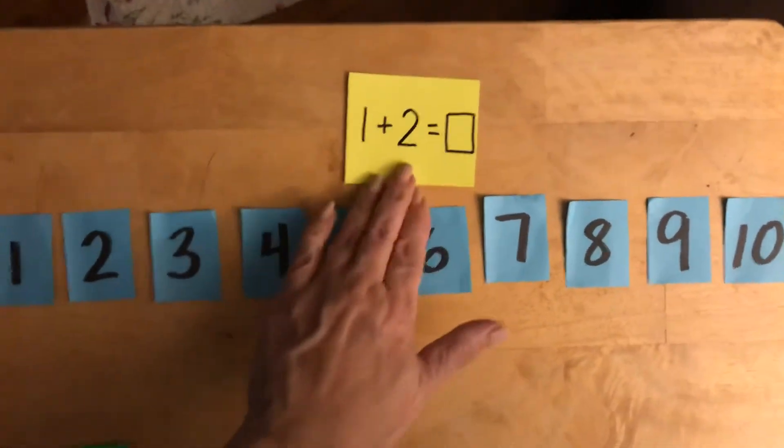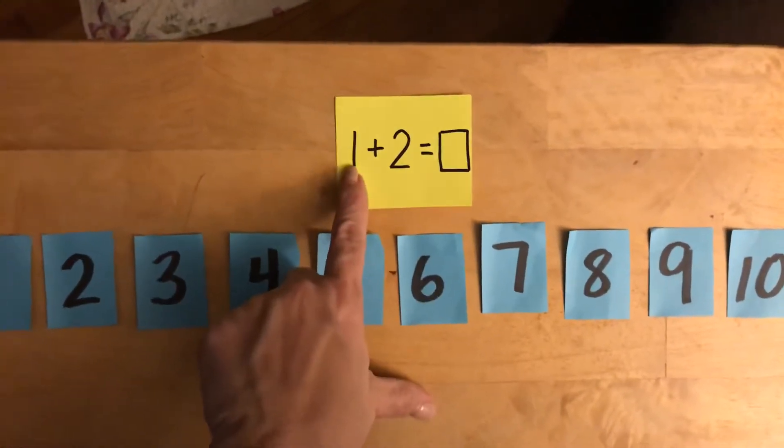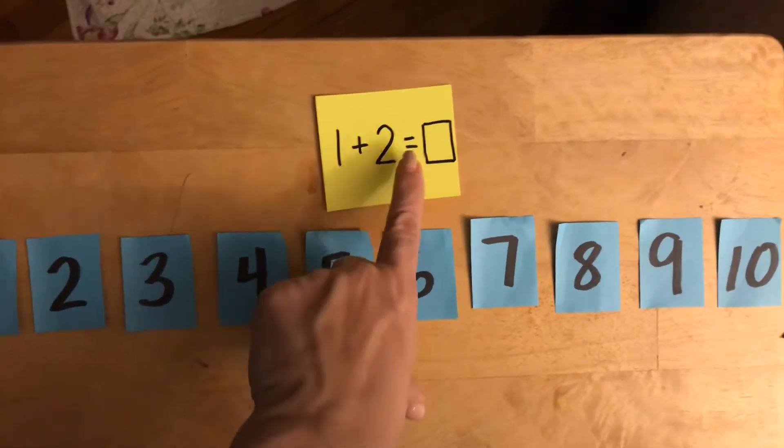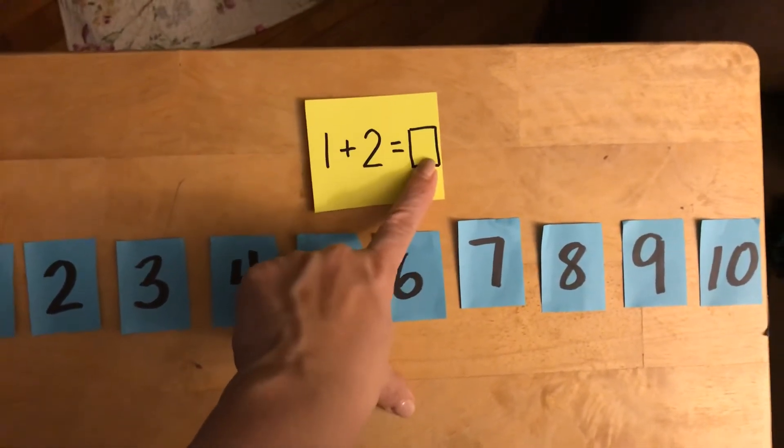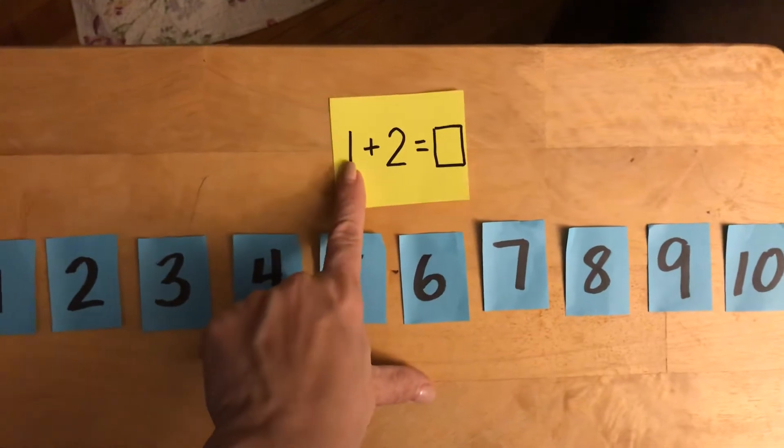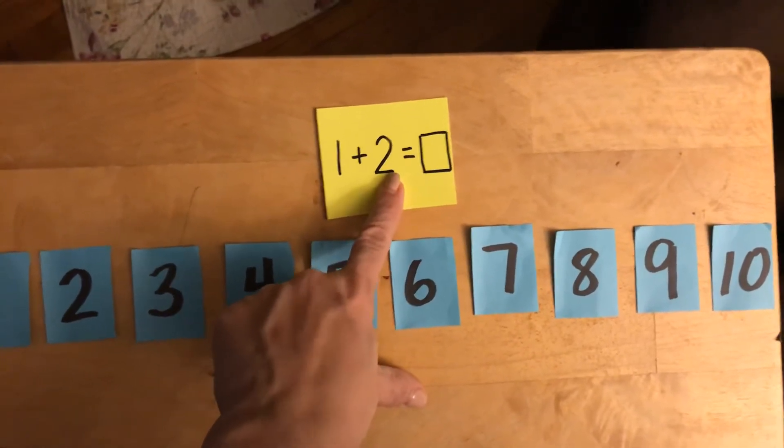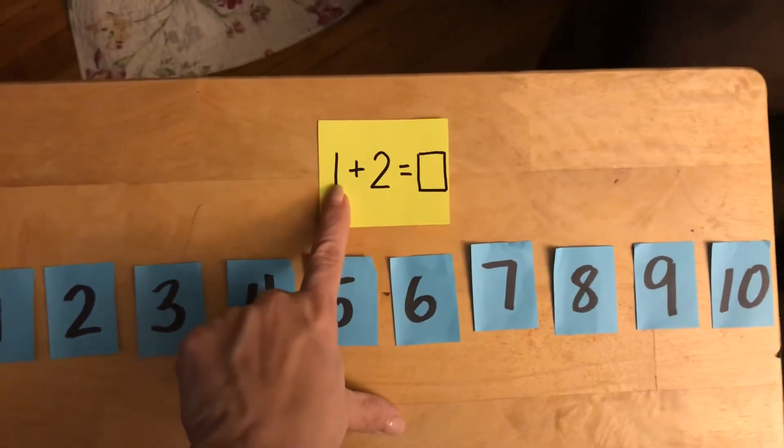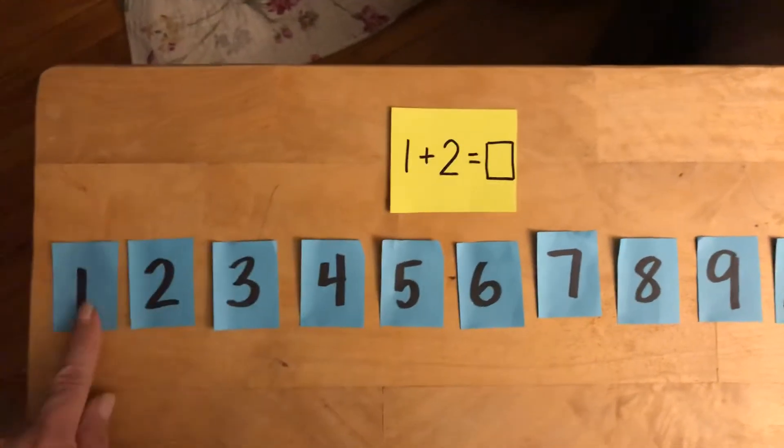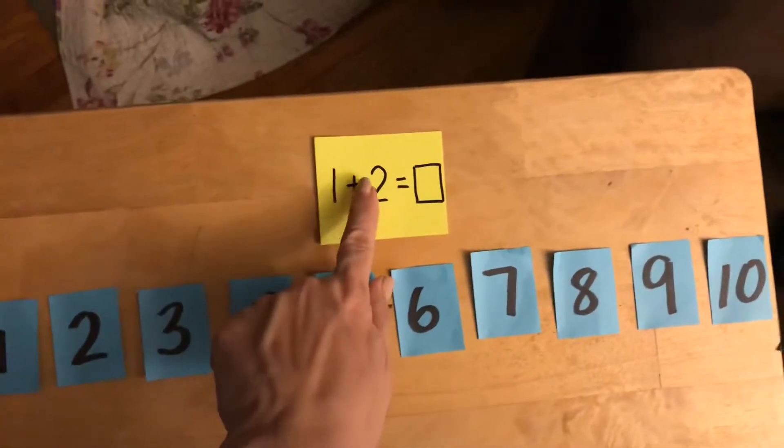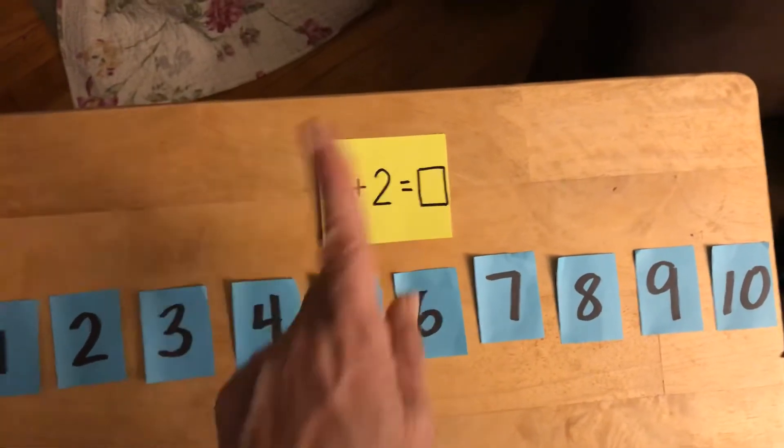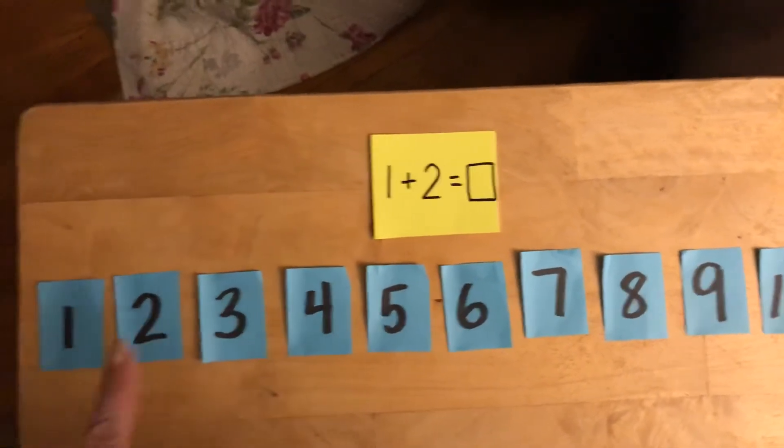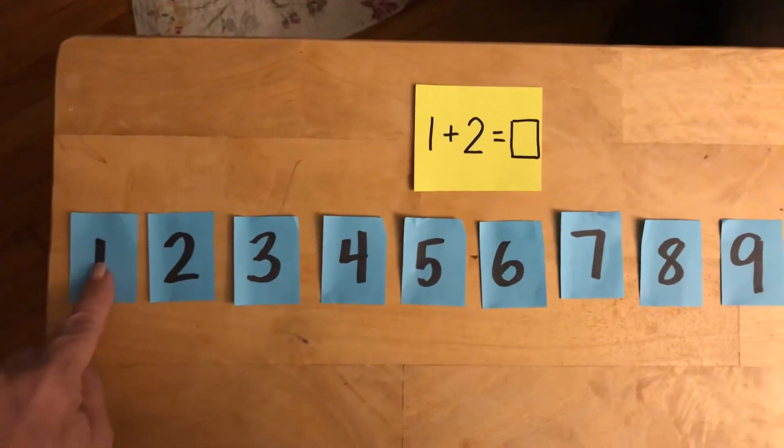So we are going to do that first one. It is 1 plus 2 equals, and we want to find that whole amount. These are the parts 1 and 2 together, and we want to find the whole amount. So for a number line, I can go to that first number 1, and then add 2. That means making 2 hops. So here I am at the 1, and I want to make 2 hops.